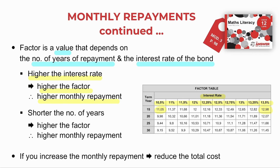Now let's look at the term of the loan — the number of years: 15, 20, 25, 30. At 13%, the factor at 30 years is 11.06. As the years get smaller, the factor increases to 12.65. So the trend is: the shorter the number of years, the higher the factor, and again, the higher the monthly repayment. We also know that if you increase the monthly repayment, you reduce the cost of the loan.